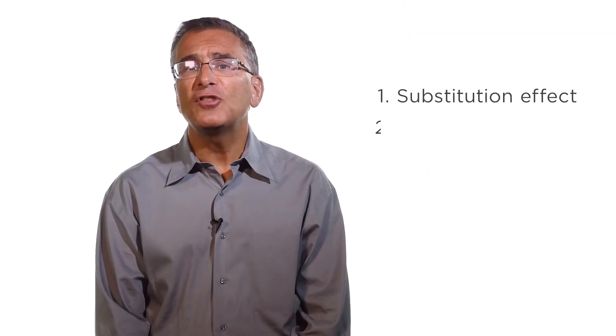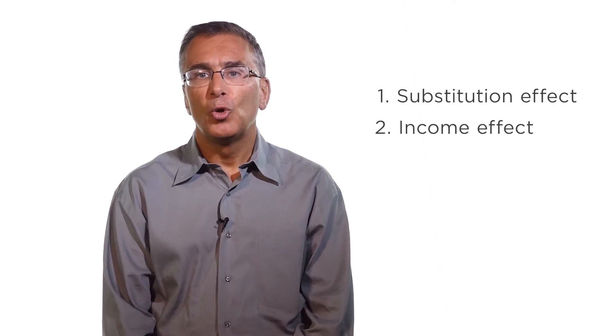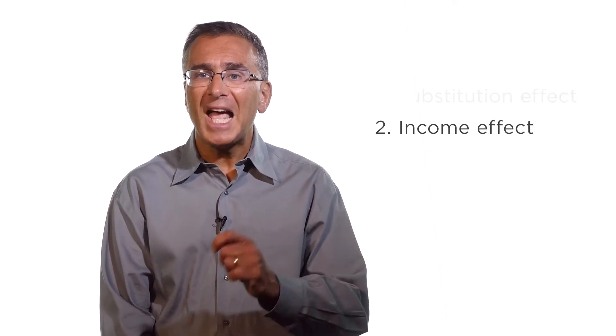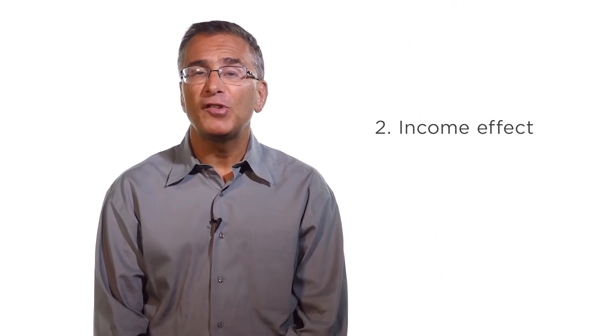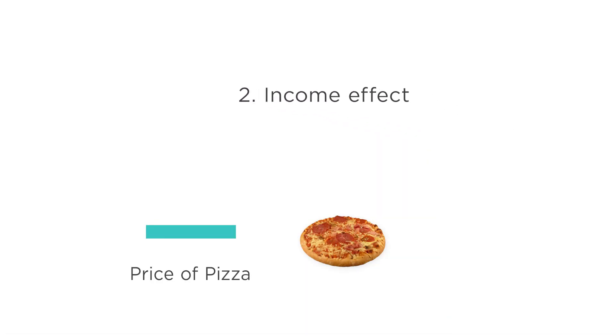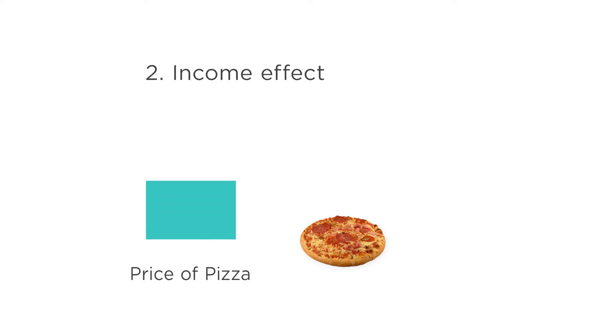The second effect is called the income effect, which is the extent to which you consume less of a good when its price rises because that price increase has made you effectively poorer. When the price of pizza goes up, in what sense are you poorer? I haven't taken any of your money, but I've restricted your opportunity set. When the price of pizza goes up, given your income, you can now buy fewer goods.